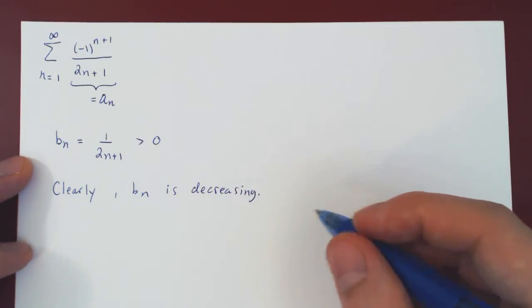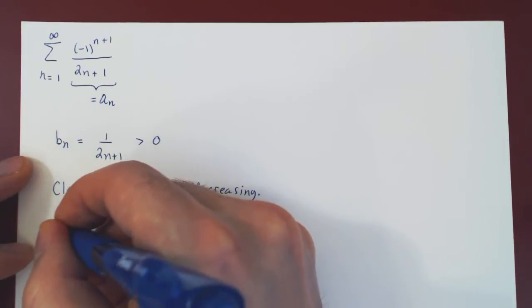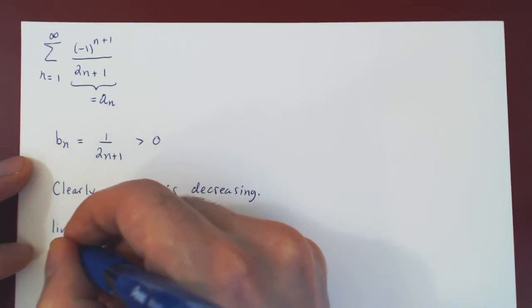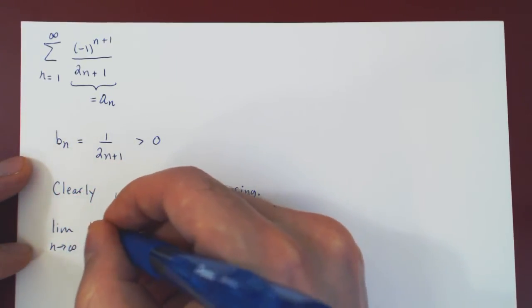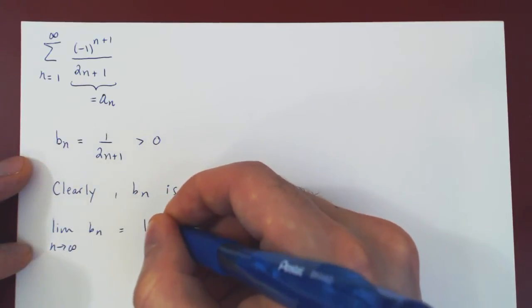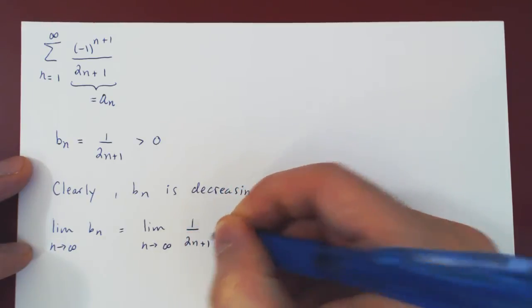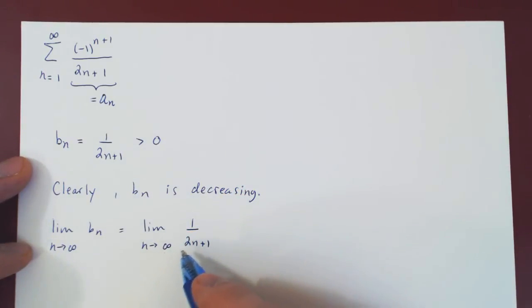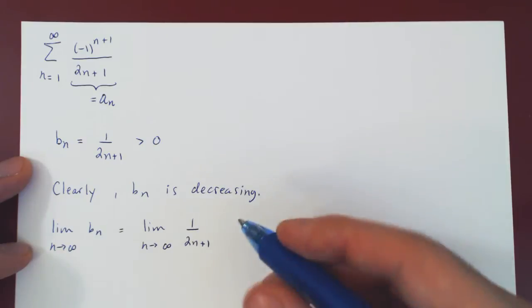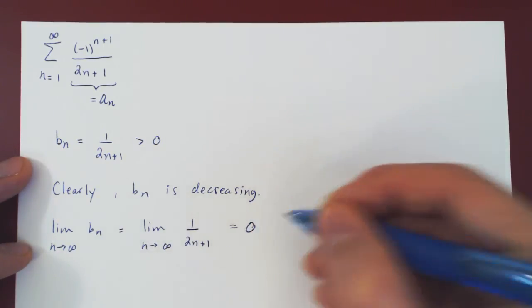So the first condition is met. The other condition, if you recall, was to show that the limit as n goes to infinity of Bn is equal to 0. But this limit is trivial as Bn is 1 over 2n plus 1. So as n goes to infinity, so does 2n plus 1. We have a 1 over infinity case, which of course in the limit gives us 0.